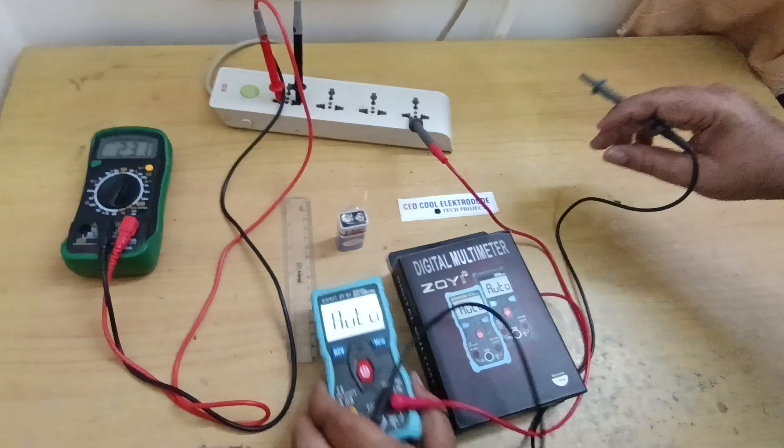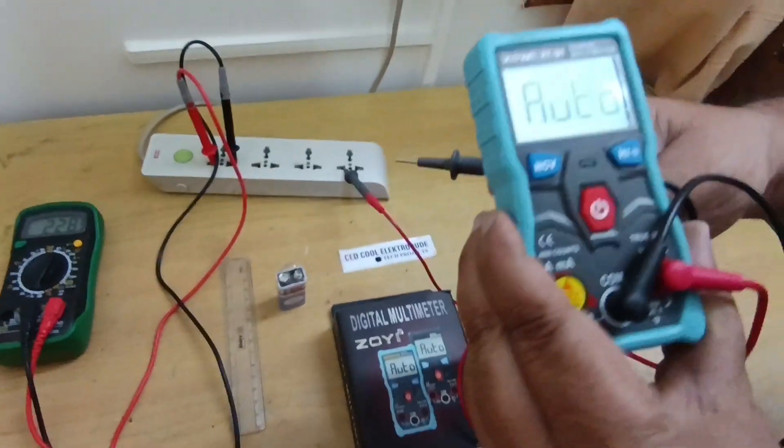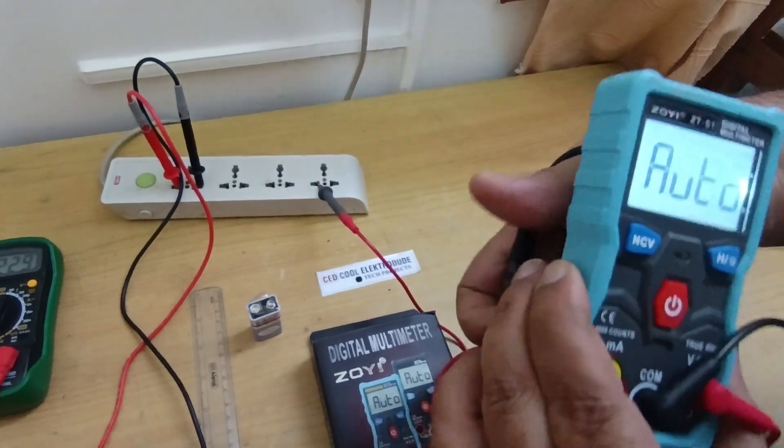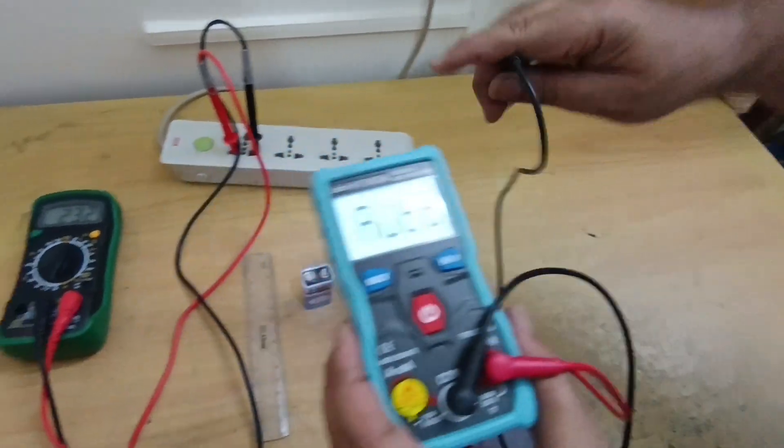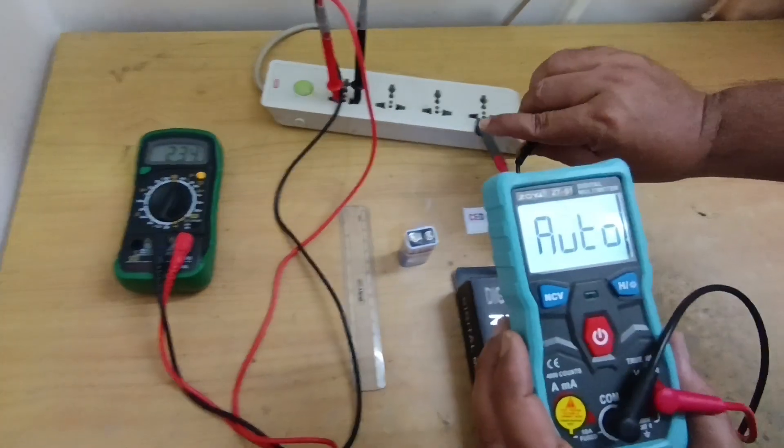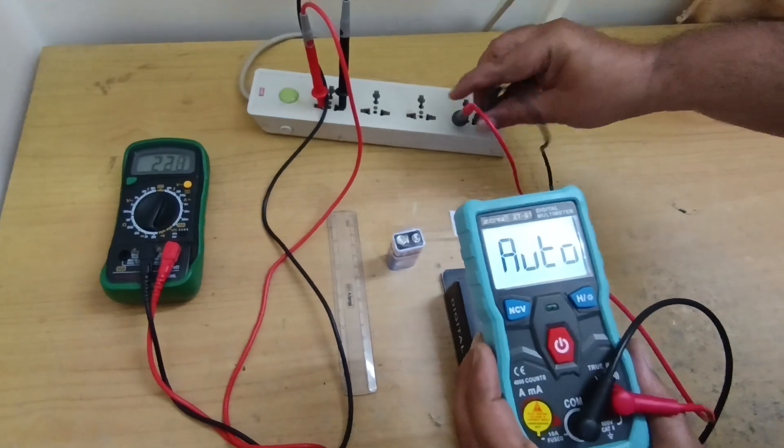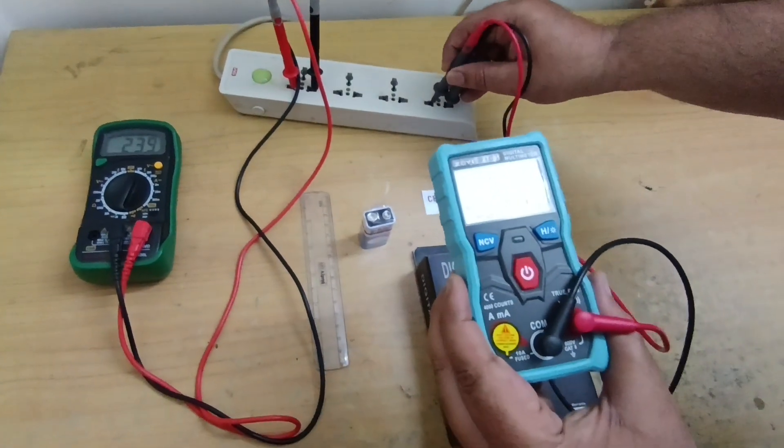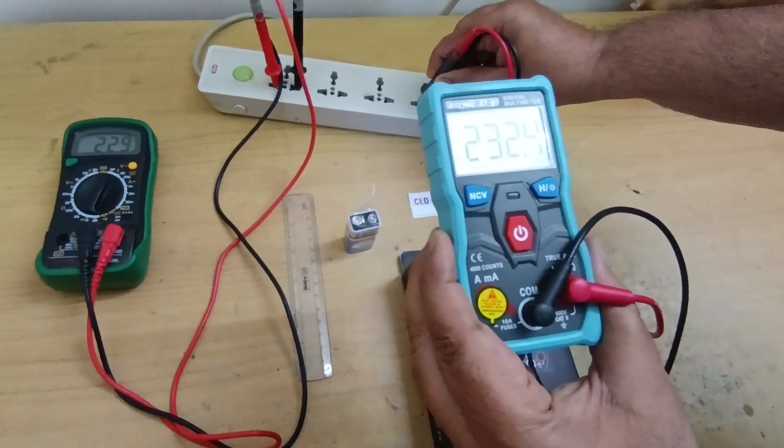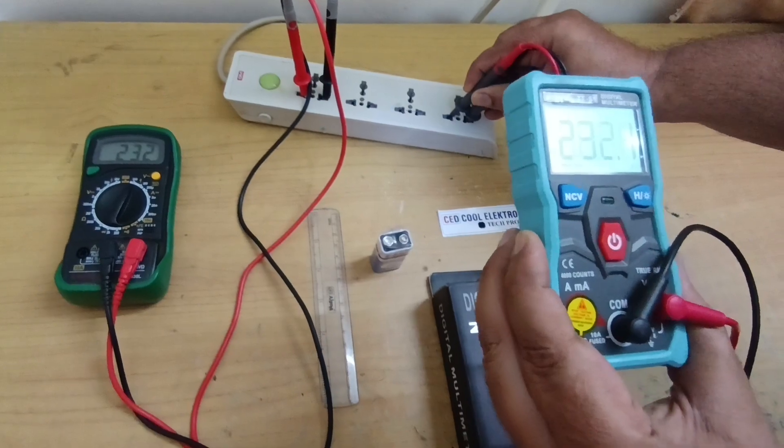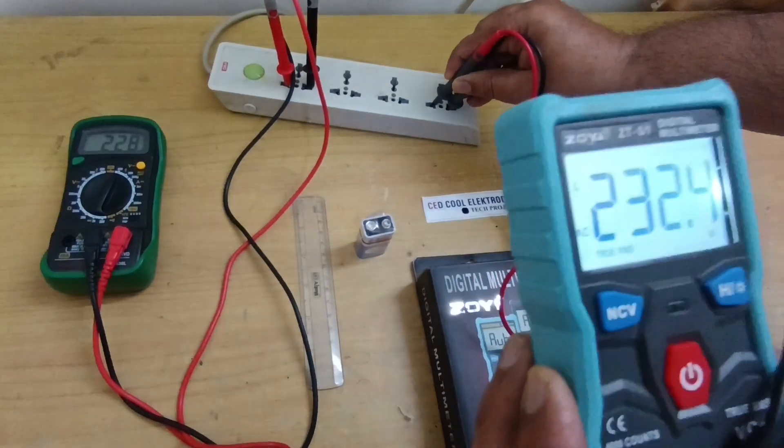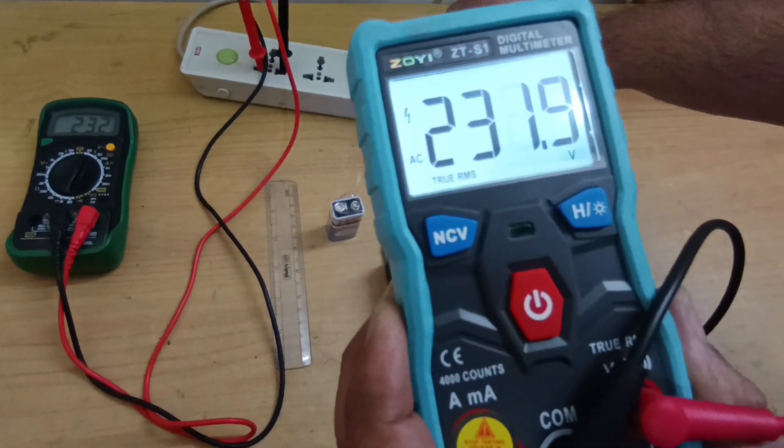Now we will check the voltage measurement. Since it is a true RMS meter, we will check the voltages. You can see this multimeter is not a true RMS meter, but this is the true RMS meter. The moment we connect, it's showing 232.2. You can see the difference between that multimeter and this multimeter. It's showing AC on the display with voltage 232.1.